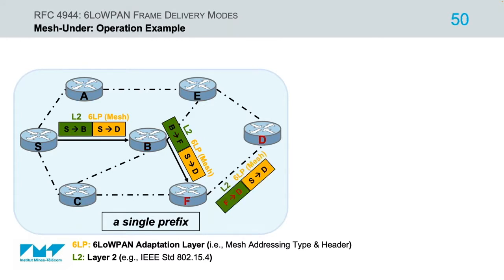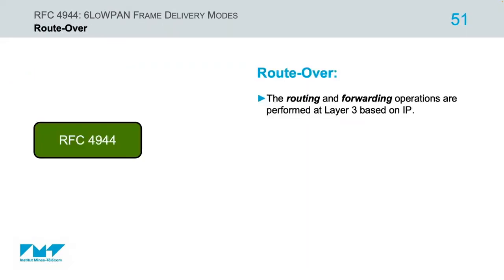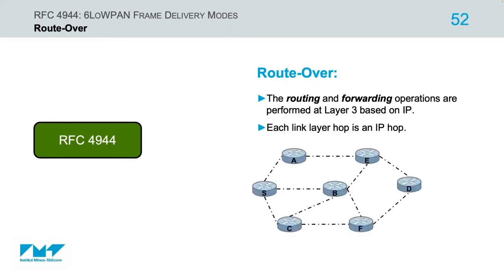These operations are performed for each frame and each intermediate node before an IPv6 packet reaches its destination. The second approach of 6LoWPAN frame delivery is called route over, or per-hop fragmentation and reassembly mode, where the routing and forwarding tasks are executed at the network layer — layer 3 — based on IPv6. Therefore, in route over mode, each link-layer hop is an IP hop.